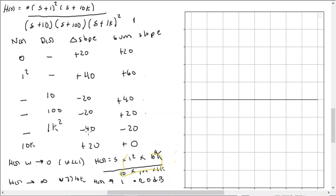Then when the poles start becoming active, we start subtracting 20, 20, and then 40 because of the repeated pole. So then the slope goes down from 60 to 40 to 20, then to minus 20, and then it flattens out at zero.